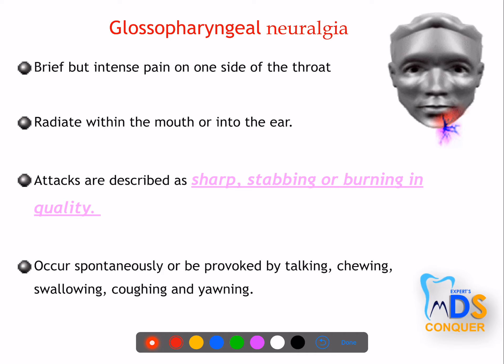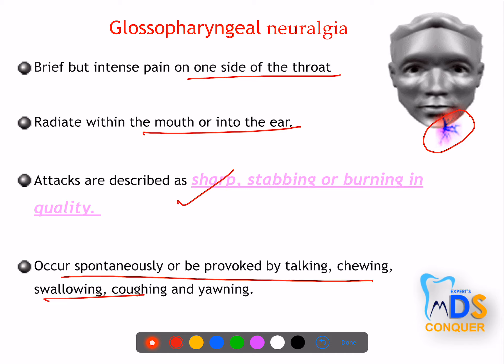In glossopharyngeal neuralgia, there are also trigger zones, but the intense pain is on one side of the throat. Pain radiates along the distribution of the glossopharyngeal nerve to the mouth and ear — the same severe, stabbing, and burning quality. Attacks are triggered by talking, chewing, swallowing, yawning, or coughing.